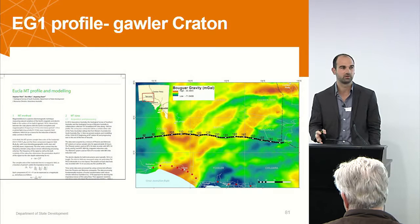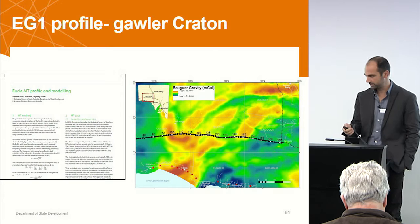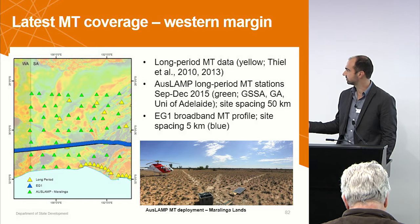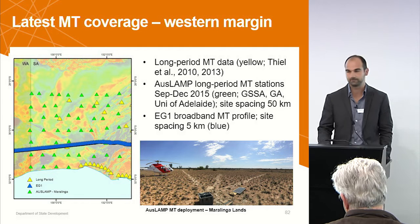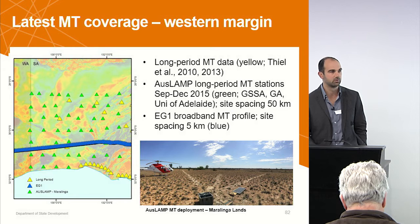There's already some information across the western margins from Ron Woods, presented at a workshop held last year in December, so there are already some papers and results there. There's also some other data that straddles the 3D inversion data. Some of the yellow sites are older long-period data, very sparsely spaced. There's also the Fallow profile, which runs just along the coast.